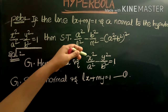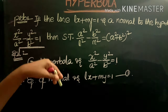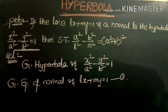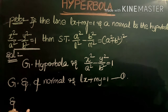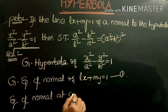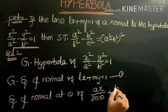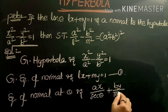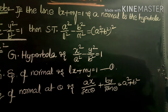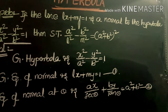The given hyperbola equation is x²/a² - y²/b² = 1. The given equation of normal (equation 1) is lx + my = 1. The formula for the equation of the normal at parameter θ (equation 2) is ax/sec θ + by/tan θ = a² + b².